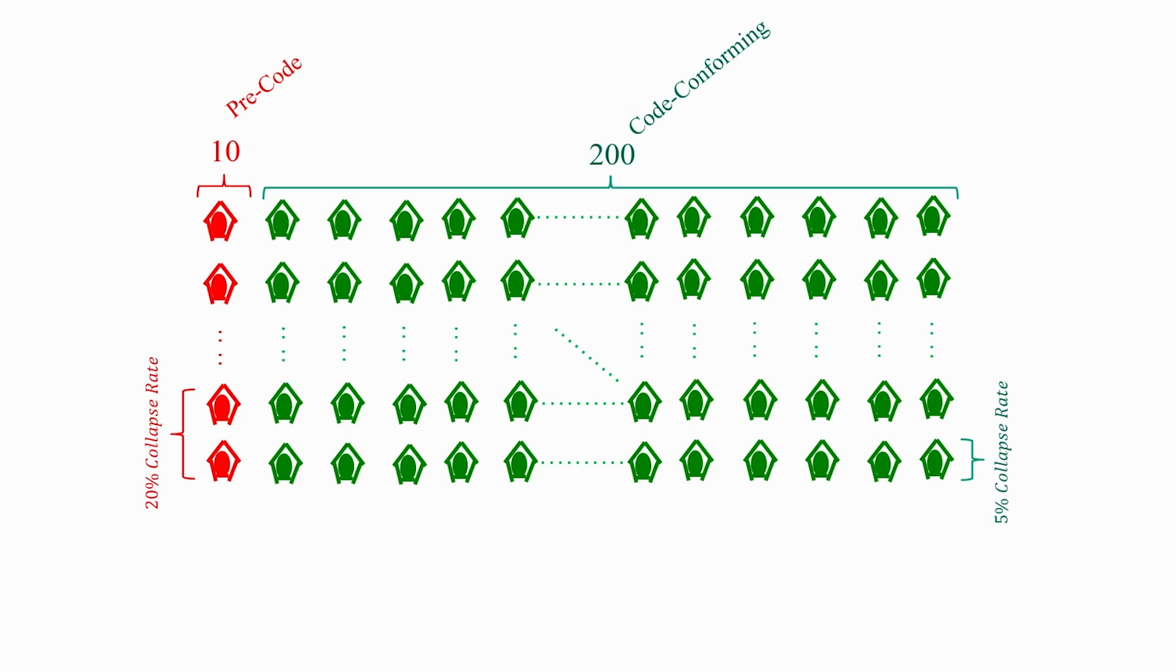So for the purposes of putting some numbers to it, we will say that the pre-code building is four times as likely to collapse, all else equal, compared to the modern code conforming building. With that in mind, we will assign a 5% collapse rate to the code conforming buildings and a 20% collapse rate to the pre-code building.